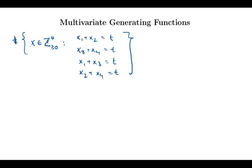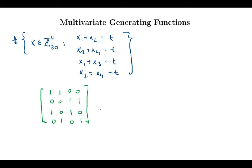Like in that section, let me rewrite this linear system as a matrix. I have x1 plus x2, then x3 plus x4, then x1 plus x3, and then x2 plus x4 — giving me a matrix, with zeros elsewhere. This matrix times the vector x equals the vector with entries t, t, t, and t. Let's not forget the non-negativity constraints on each entry.